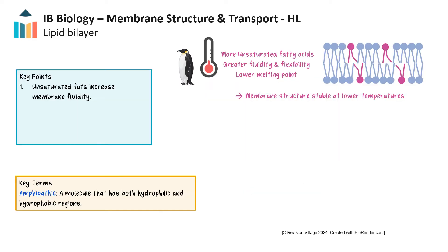The fluidity of cell membranes depends largely on the fatty acid composition of the lipid bilayers. Lipid bilayers consist of phospholipids, which have two fatty acid tails that can vary in saturation. Unsaturated fatty acids contain one or more double bonds, causing kinks in the tails that prevent tight packing, thereby lowering the membrane's melting point. This lower melting point results in greater fluidity and flexibility, allowing the membrane to adapt to colder temperatures.